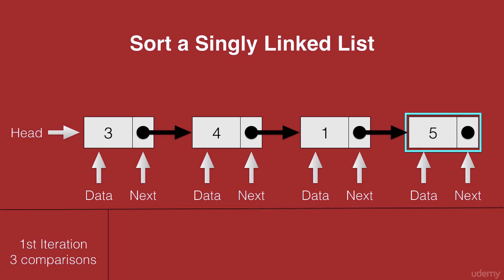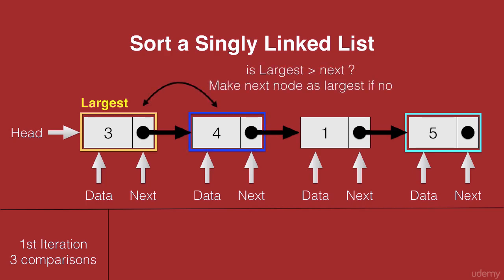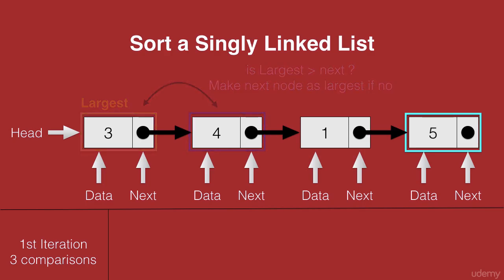So in our first iteration, we made 3 comparisons: we compared the first node with the second, the second with the third, and the third with the fourth. Now let's start the second iteration by going back to the beginning of the list and pushing the second largest element to the last second position. We once again start from the head node, mark that node as largest, and check it with the next node which is 4.